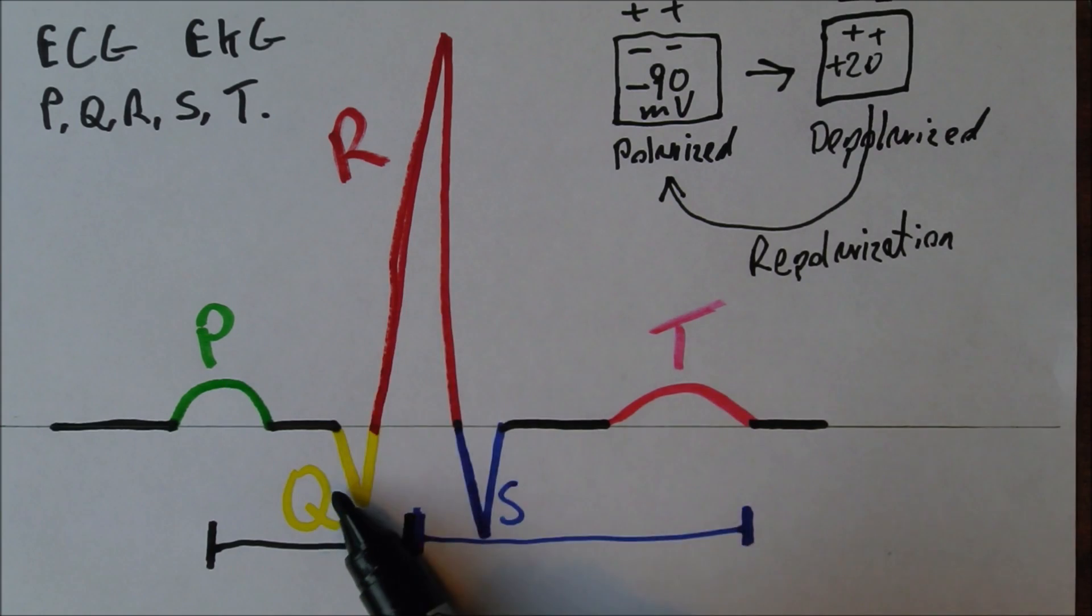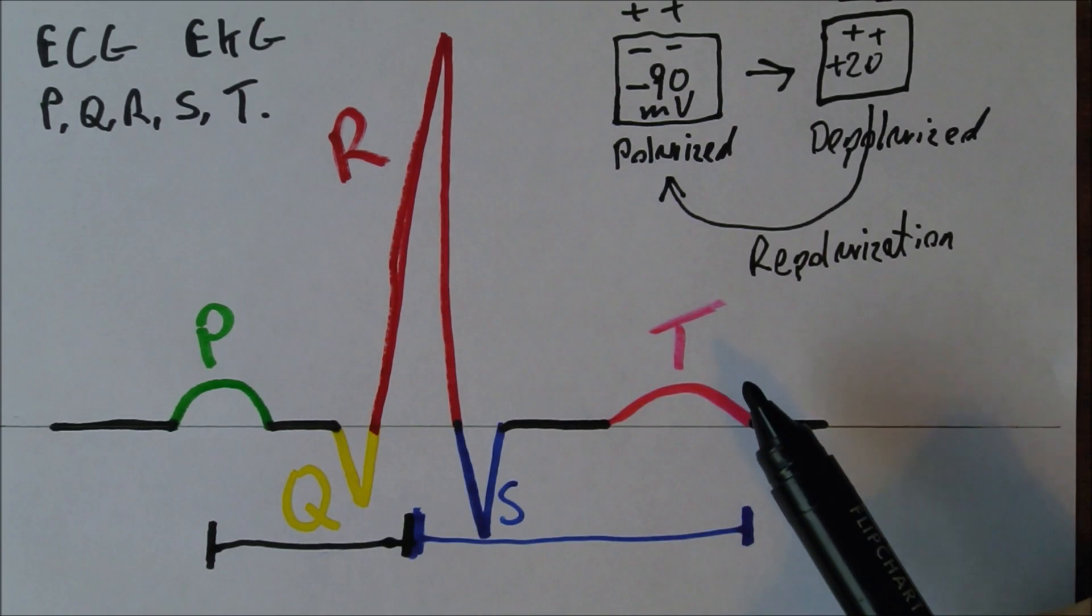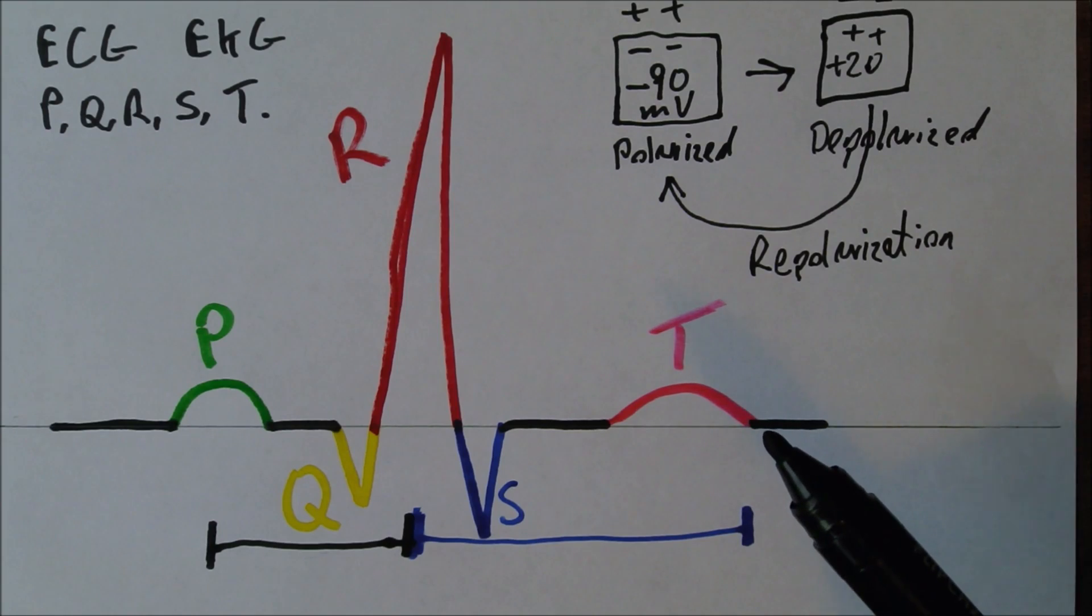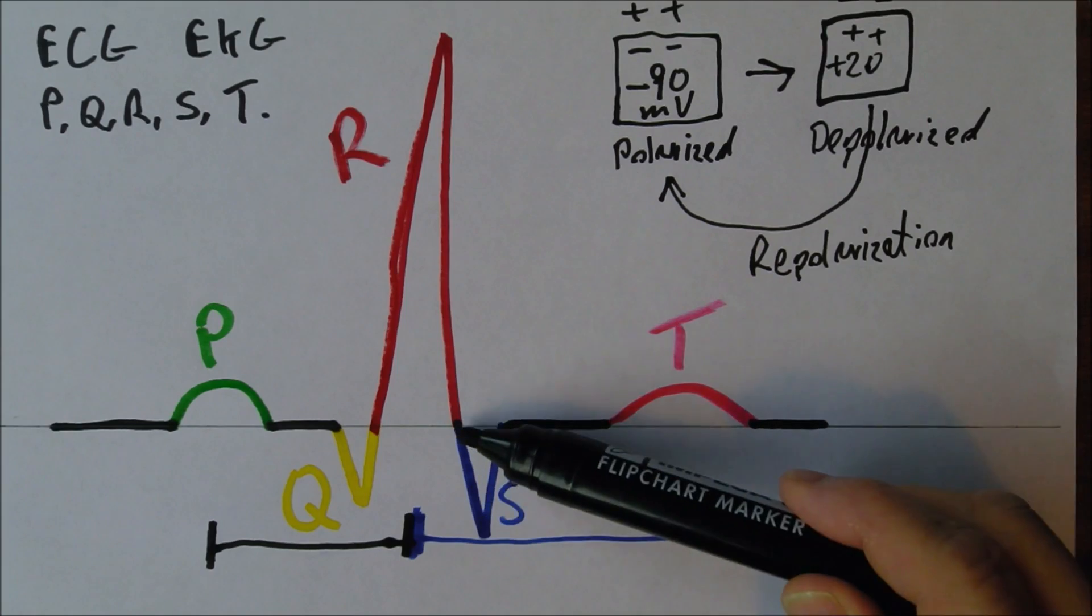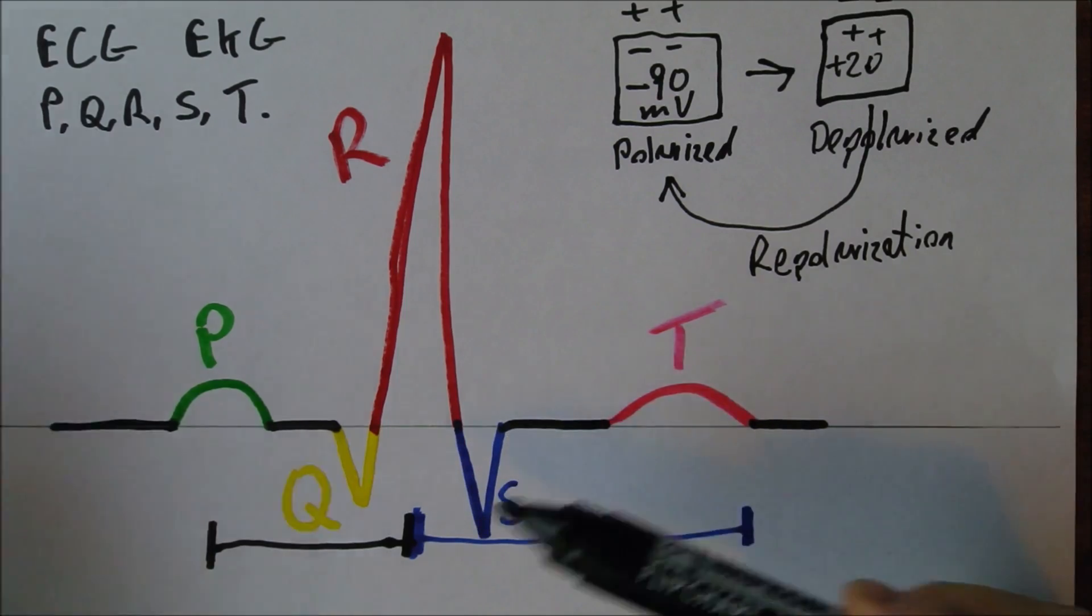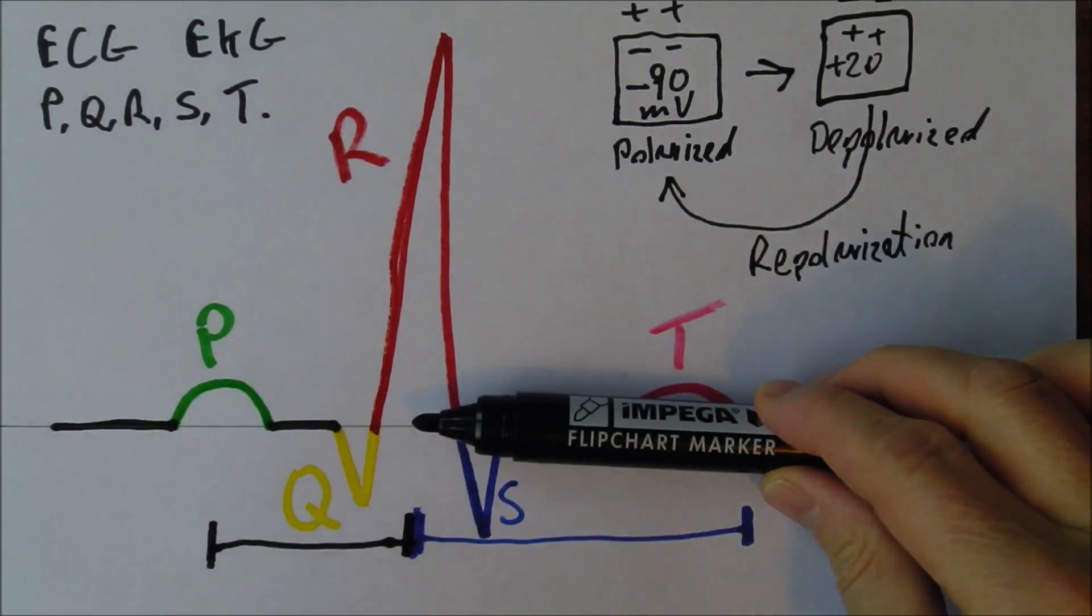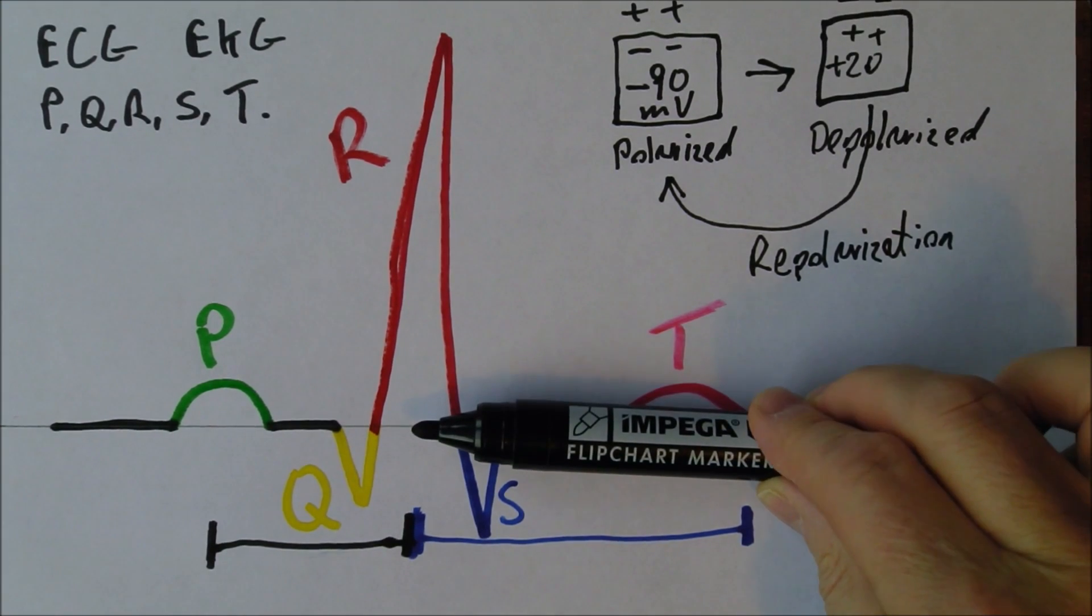So P in green, Q, R, S and T all in their relevant colors. And what confuses a lot of people is that the wave is the upward deflection and the downward deflection. Or here the downward deflection and the upward deflection away from this isoelectric line. ISO just meaning the same.